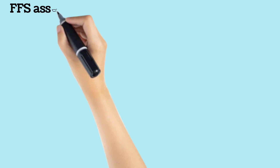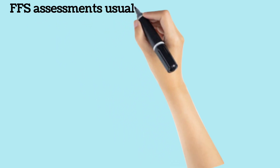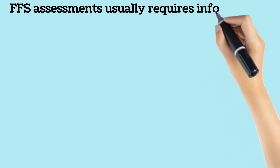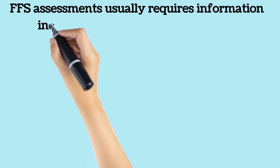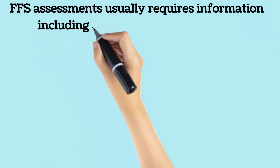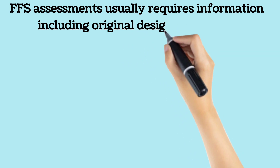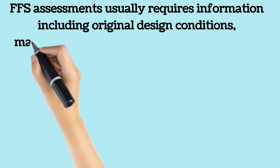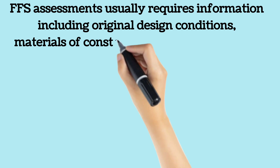This assessment is also used as a rational reference for determining material structural limits to differentiate between acceptable and unacceptable material conditions for operation. FFS assessments usually require a standard list of information including original design conditions, materials of construction, and operation and maintenance history. While this information is part of standard record keeping at many facilities, it is not always readily available.